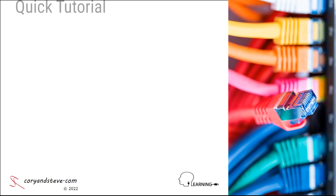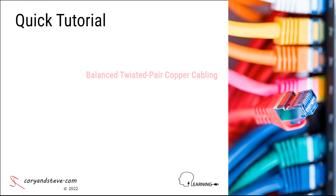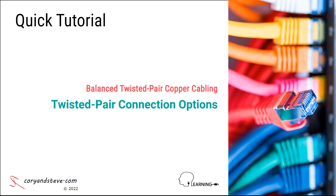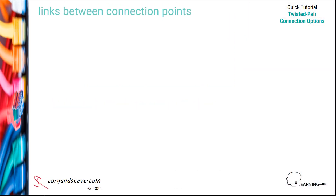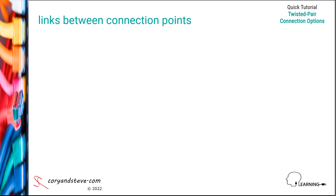Hello, this quick tutorial summarizes the types of connections to choose from when designing a balanced twisted pair network cabling infrastructure. Let's begin with a look at the options for the links between connection points in a termination space, for example between patch panels and network switches in a telecom room.